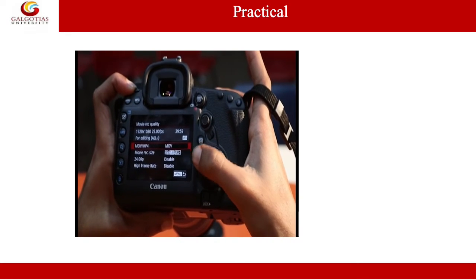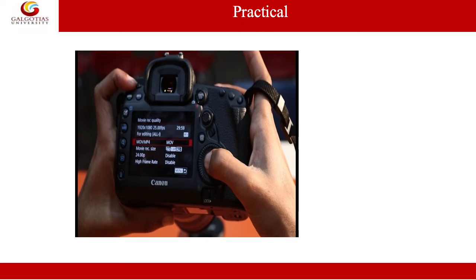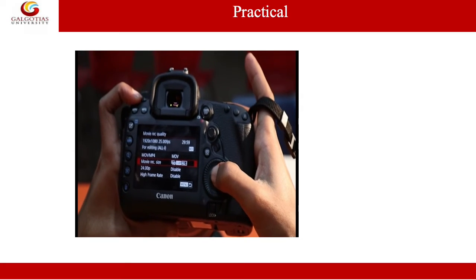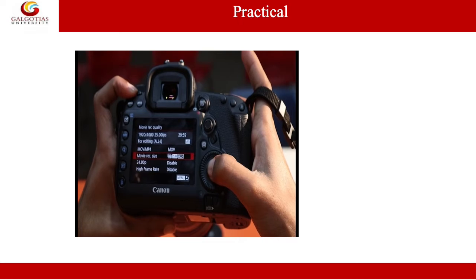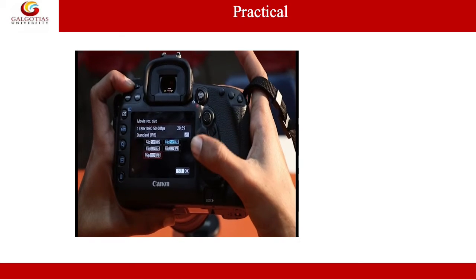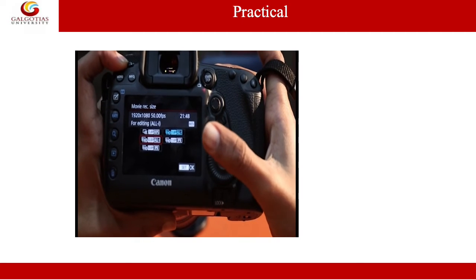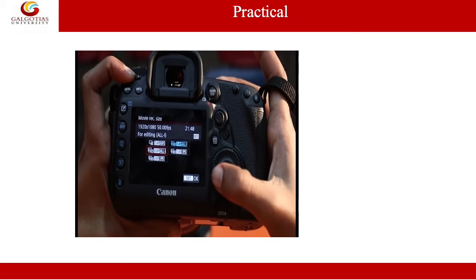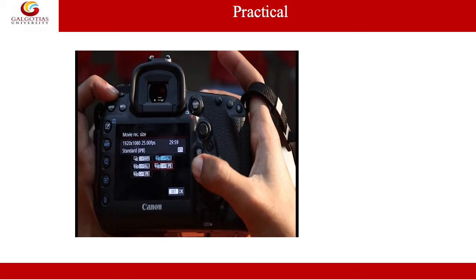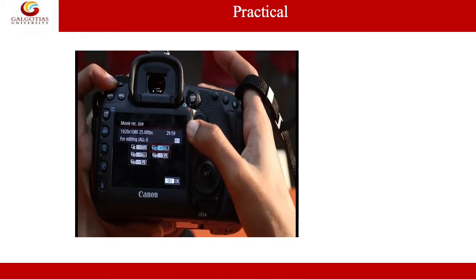Here we have the first setting: movie record size and the type of recording. We can set it to MOV or MP4, whichever you like. The movie recording size is the important setting to keep in mind. We have multiple options: starting from full HD video recording at 50 fps, to full HD with slightly better quality, then full HD at 25 frames per second, and full HD at 25 fps with ALL-I — meaning a little better quality.